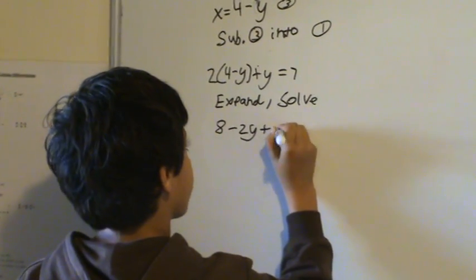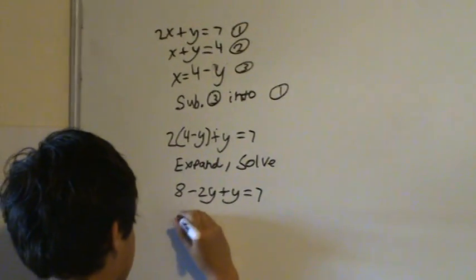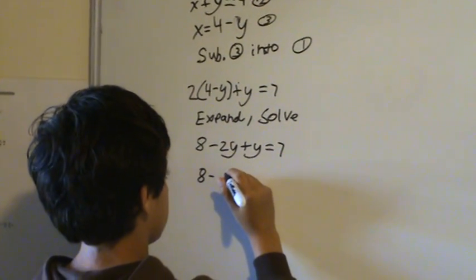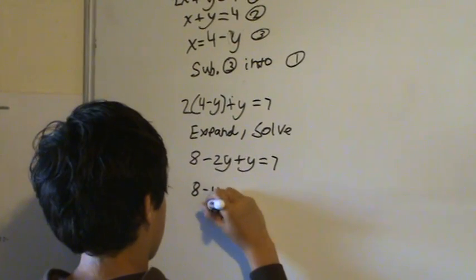And then carry down the stuff that you didn't touch. I can see that there are two y terms there, so I'll tidy them up. And minus 2y plus y is minus 1y.